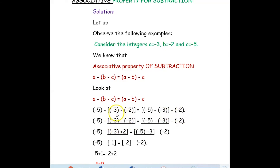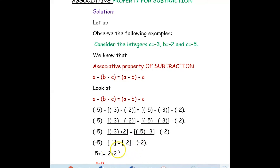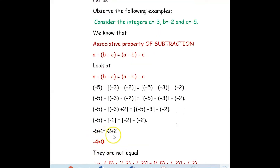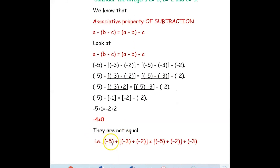Solving the parentheses: left side — negative 3 minus negative 2 becomes negative 3 plus 2 = negative 1. Right side — negative 5 minus negative 3 becomes negative 5 plus 3 = negative 2. So the equation becomes negative 5 minus negative 1 equal to negative 2 minus negative 2. Simplifying: negative 5 + 1 = negative 4, and negative 2 + 2 = 0. They are not equal, so (A − B) − C ≠ A − (B − C).